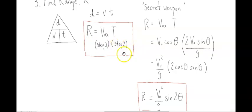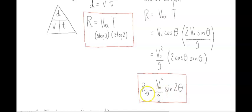There is a secret weapon where you can have a formula that eliminates time. If vox is v0 cosine theta, which is formula 7, and you multiply it by the results of step 2, time of flight being 2 v0 sine theta divided by g, multiplying v0 squared over g, multiplied by 2 cosine sine, which is a double angle formula, you get R equals v0 squared over g sine 2 theta. Either form is correct, and both always work.